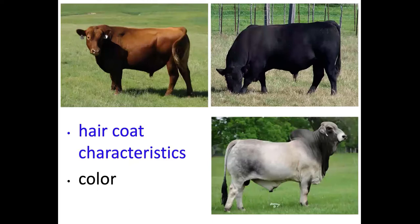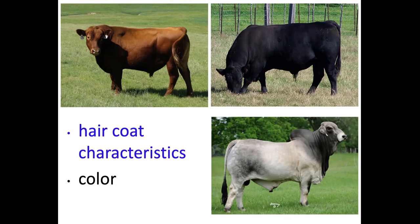In Texas, especially East Texas and as we move south, we live in a hot, humid environment, so hair coat characteristics are important — and we're starting to see this matter in other environments too, like the fescue belt. We want animals that shed their coat off and aren't carrying a heavy coat into summer. Some breed associations are working on EPDs for shedding ability. Color may also be important if you're marketing into a certain program.